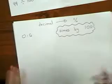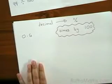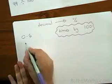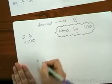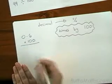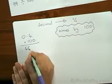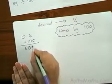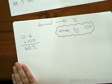Okay, now we've got 0.6 as our decimal. We're going to times by 100 and that will give us 60. You must remember to write the percentage sign in.